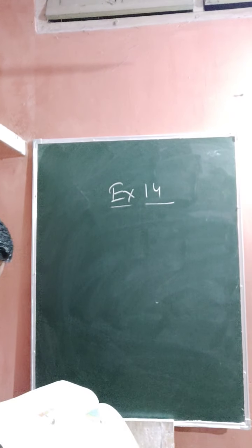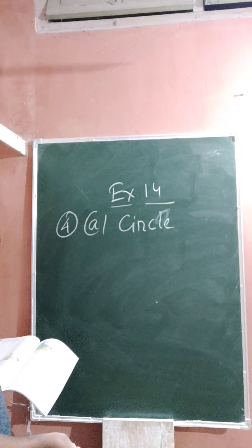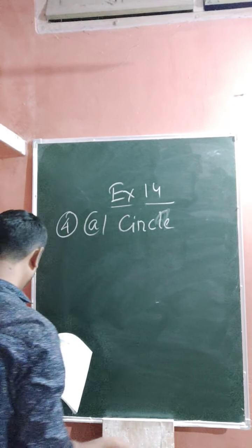Now comes question number four: state the number of lines of symmetry for the following figures. Number four, part a is a circle. A circle has infinite numbers of lines of symmetry.